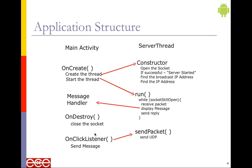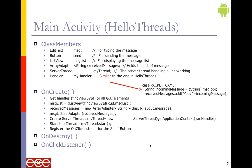In terms of the thread, because we're not using the built-in SMS feature — instead we're creating our own. The application structure: the main activity, the onCreate would create the thread, start the thread. The constructor would open up a socket; if successful, it would find and broadcast the IP address. While the socket's open, it's going to receive messages and display messages. Instead of just keeping them in text files, it's going to put them on a list view. Then onDestroy, close the socket. The onClickListener, when you click send, sends a UDP message.